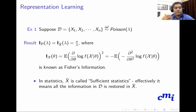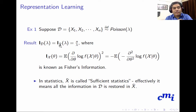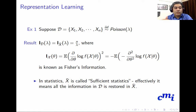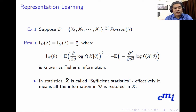One can show that Fisher information for the entire dataset is the same as Fisher information available in the sample mean. So after compressing D, which is an n-dimensional object, down to a one-dimensional object x-bar, the information is the same — no information is lost. In statistics, x-bar is called the sufficient statistic, meaning all information in the dataset is retained in x-bar.